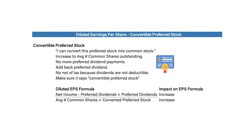For convertible preferred stock in diluted EPS: convertible preferred stock can be converted into common stock. If converted, it increases the average number of common shares outstanding, and we would no longer make preferred dividend payments, so we add back the preferred dividend. There's no net-of-tax effect because dividends are not tax-deductible, so we add back the entire dividend amount. The updated formula is: net income minus preferred dividends, then add back preferred dividends, divided by average common shares plus the effect of the convertible preferred stock. Note: the stock must be convertible — if not, it doesn't affect diluted EPS.